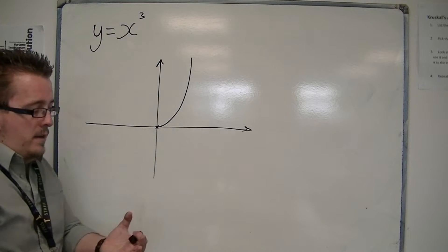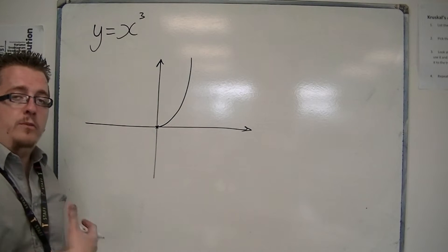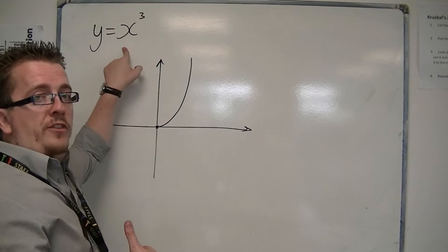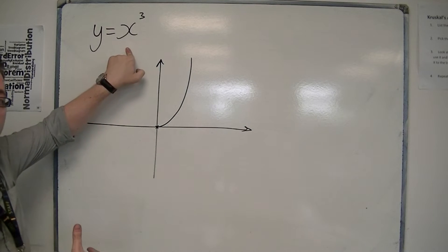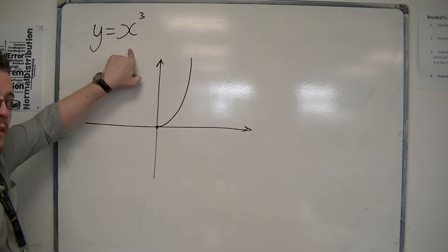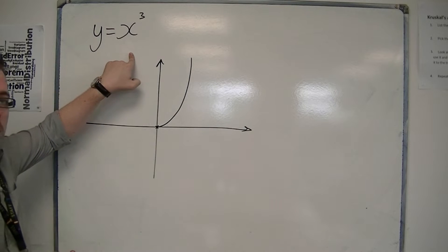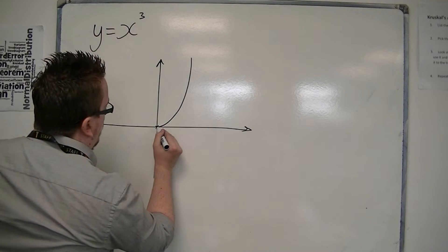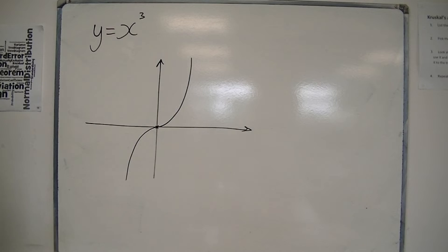And when x is negative, minus 1, minus 2, minus 3, you've got the cube of minus 1, minus 2, minus 3. So minus 1, minus 8, and then minus 27. So it will also decrease at a cubic rate.